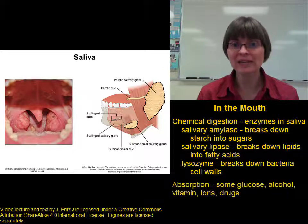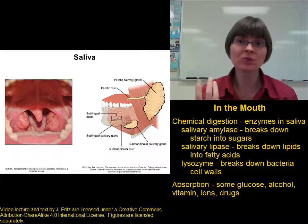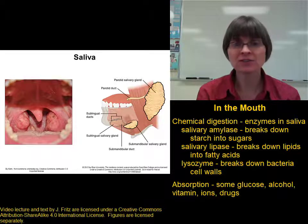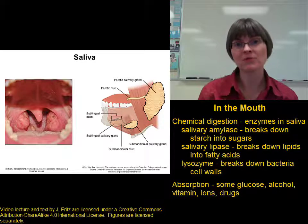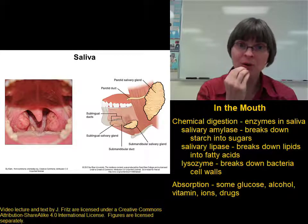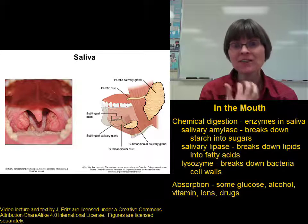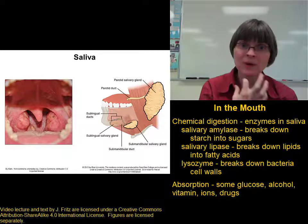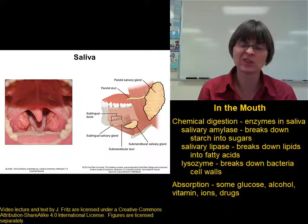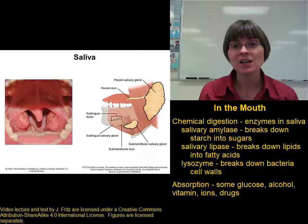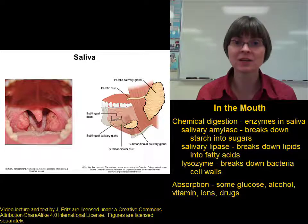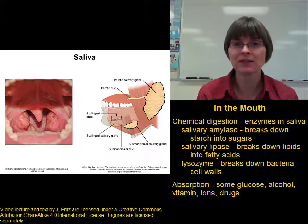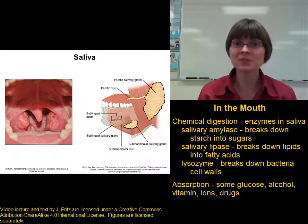Some absorption can actually happen through the mucosa of the mouth. We can absorb some glucose, alcohol, certain vitamins, ions, and some drugs right through the mucosa. A couple of advantages of administering a drug through the mouth rather than swallowing it into the stomach: you get faster absorption, since holding something under the tongue lets it absorb immediately, skipping the stomach. You also avoid the low pH and digestive enzymes of the stomach, which would destroy some drugs. Additionally, some drugs that upset the stomach and cause nausea can avoid that problem when absorbed through the mucosa.